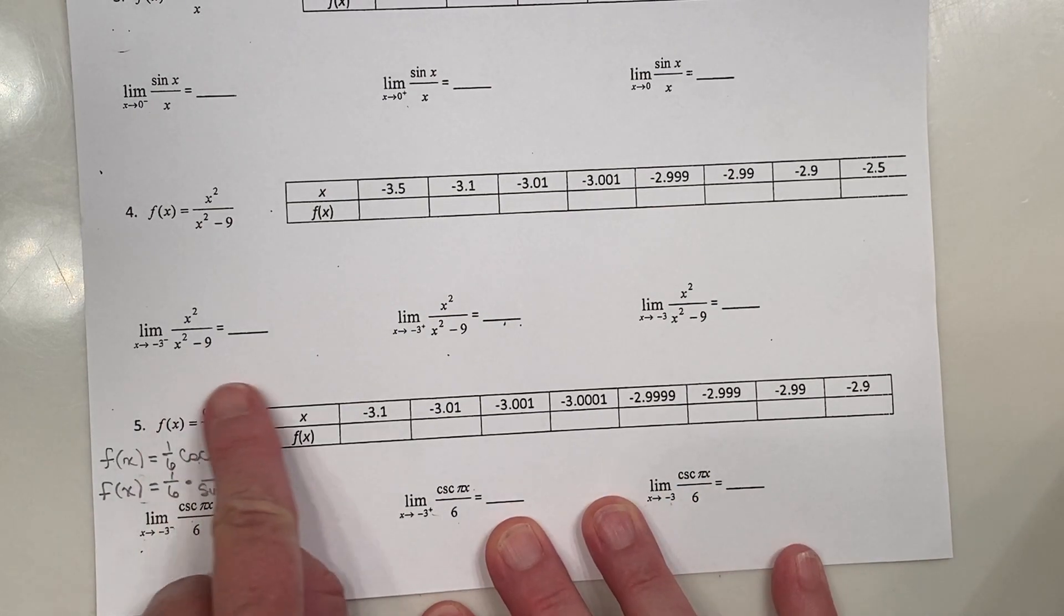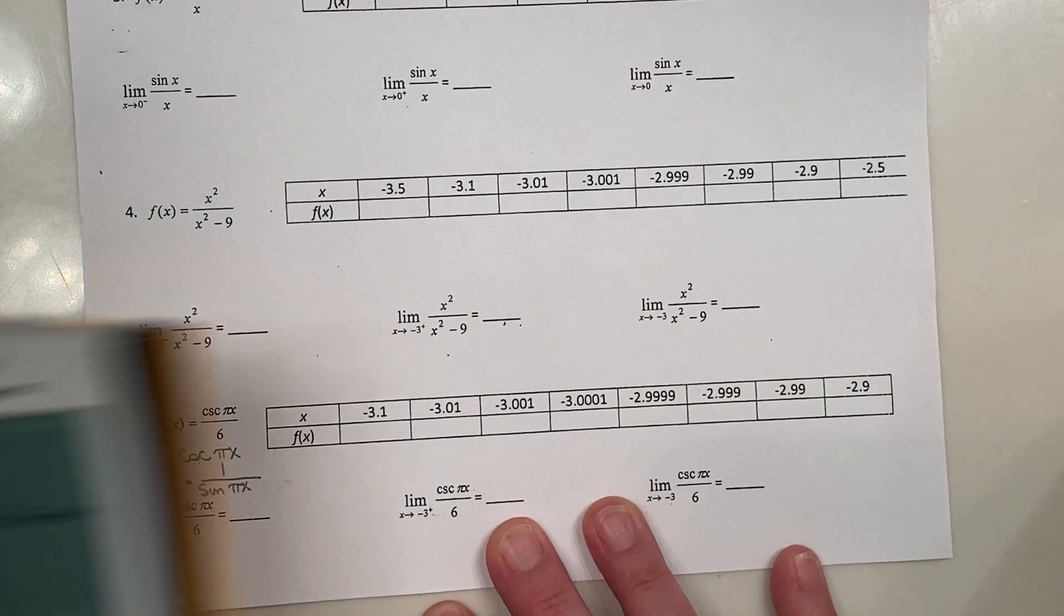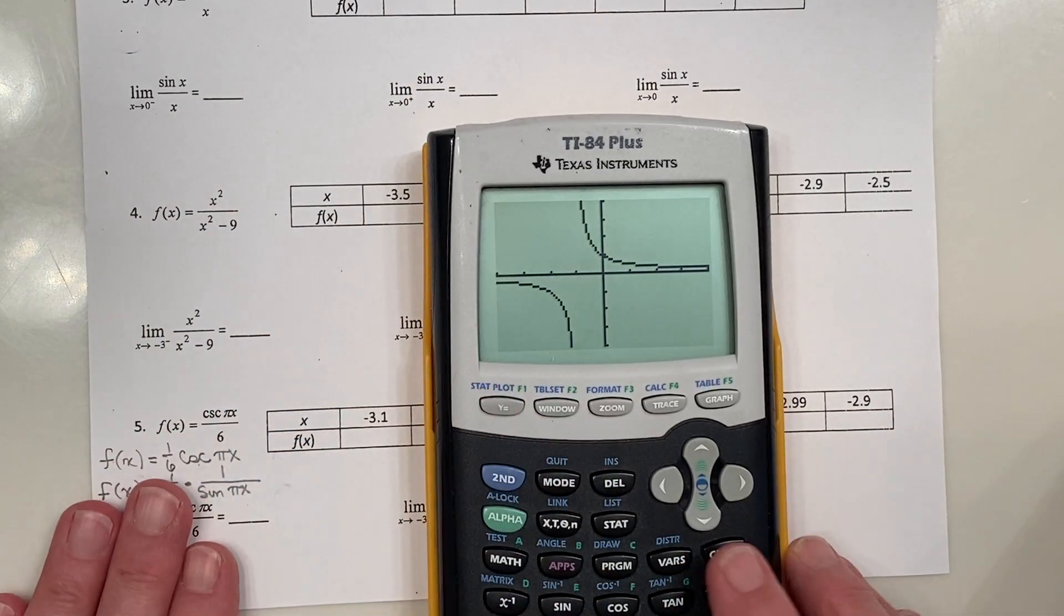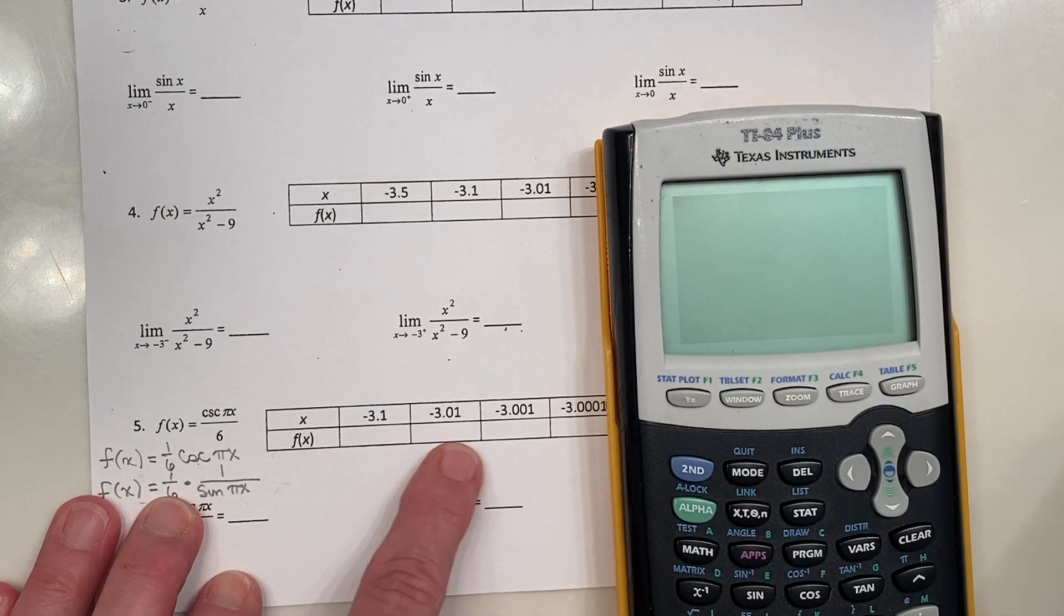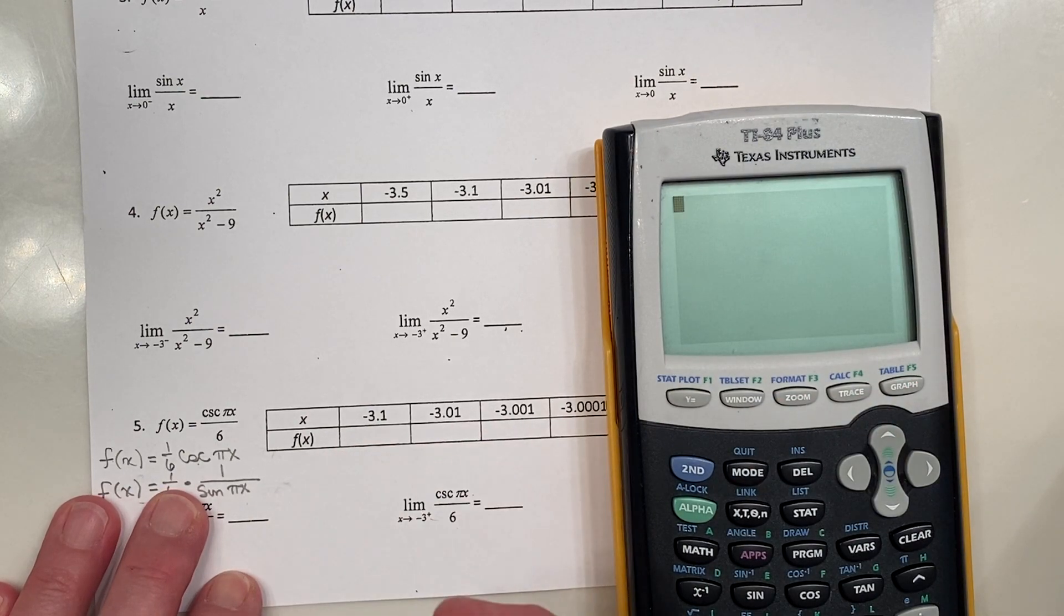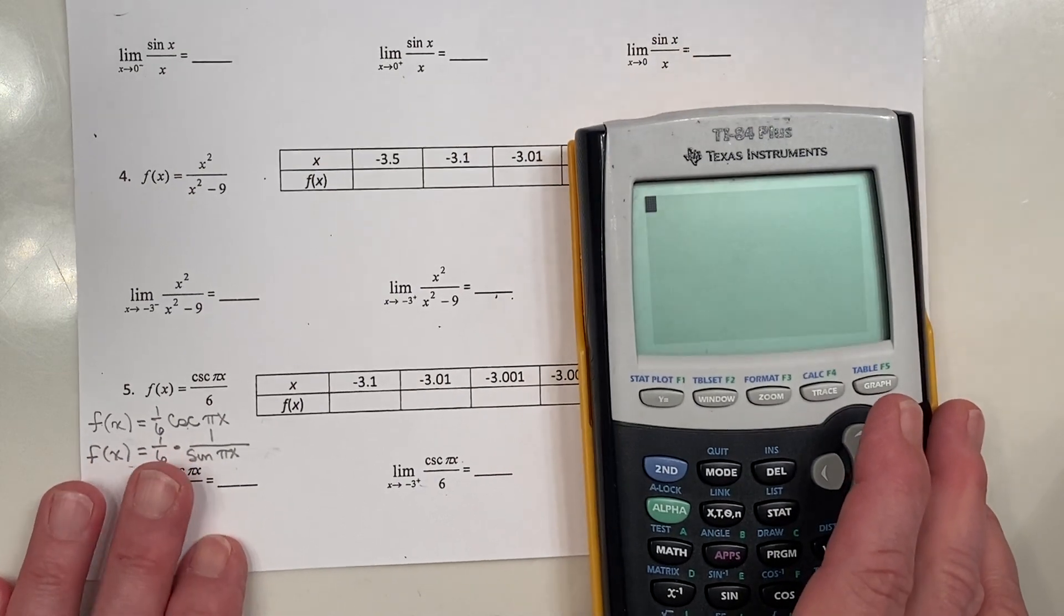All right, so we've rewritten this function, this trigonometric function, so the calculator accepts it. So let's predict what we think the answer to these limit questions are first, and then we're going to look at filling in these table of values to determine if we feel like what we were thinking is correct.